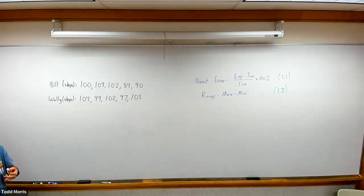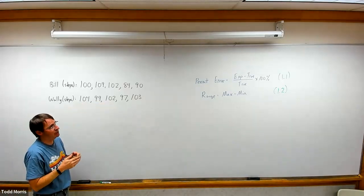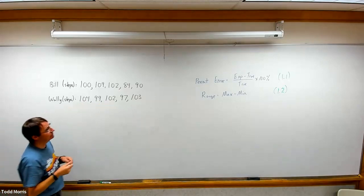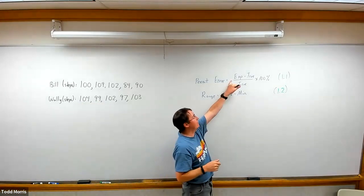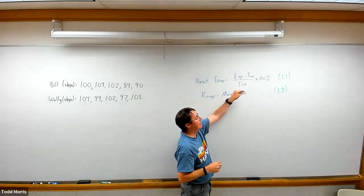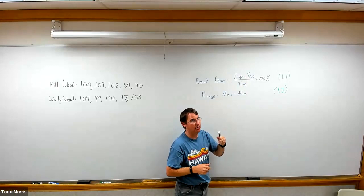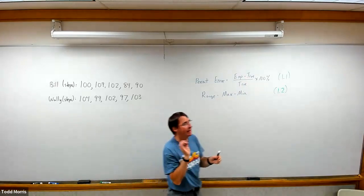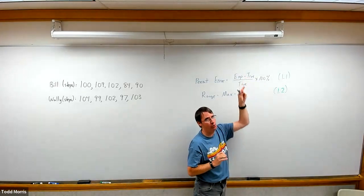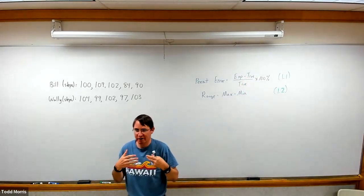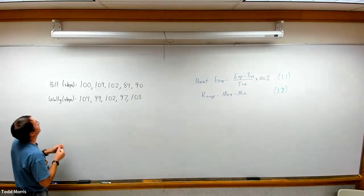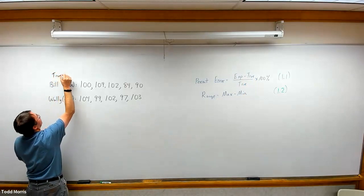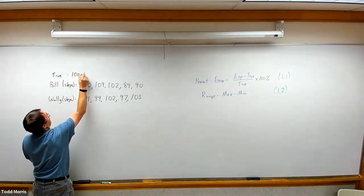We're going to judge the quality of this data both by its accuracy and precision, accuracy with percent error and precision with range. With percent error, we're going to take our experimental value minus our true value divided by the true value times 100%. Notice that with percent error as a way of measuring accuracy, we have to have a true value. We have to know what the number should be. In this fictional story, the true value in each case, they actually walked 100 steps each time.